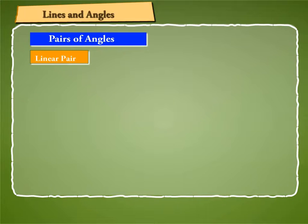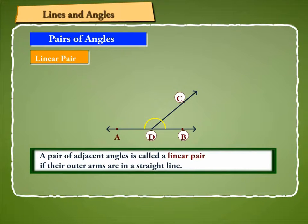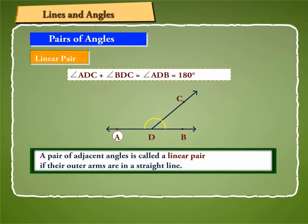Linear pair: a pair of adjacent angles is called a linear pair if their outer arms are in a straight line. Angle ADC and angle BDC form a linear pair since their non-common arms DA and DB are opposite rays. Also, angle ADC plus angle BDC is equal to 180 degrees. The angles in a linear pair are supplementary.